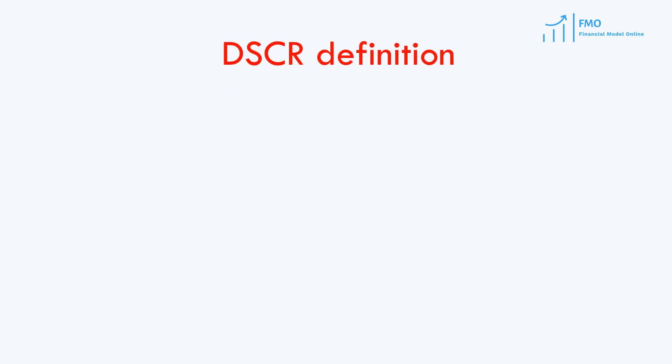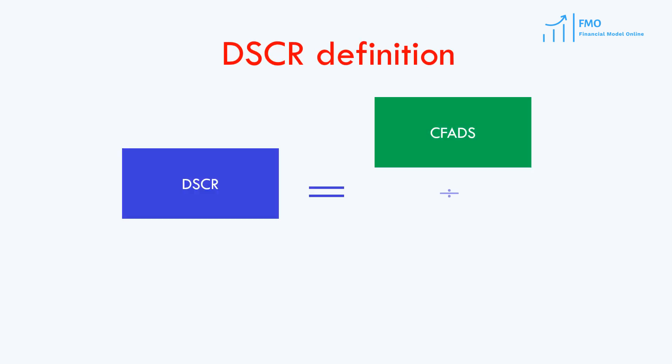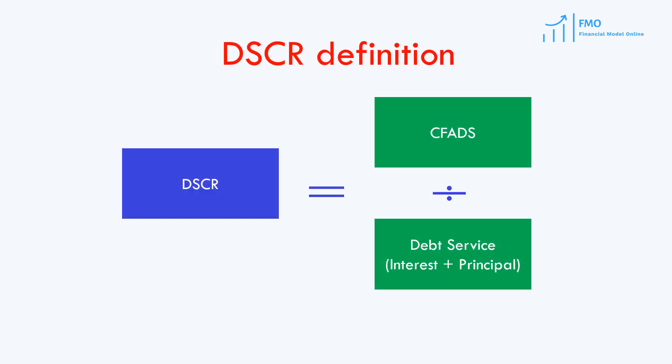We have seen the definition of debt service cover ratio — it is our CFADs over the debt service. The one drawback that DSCR suffers from is that it does not take into account the time value of money.